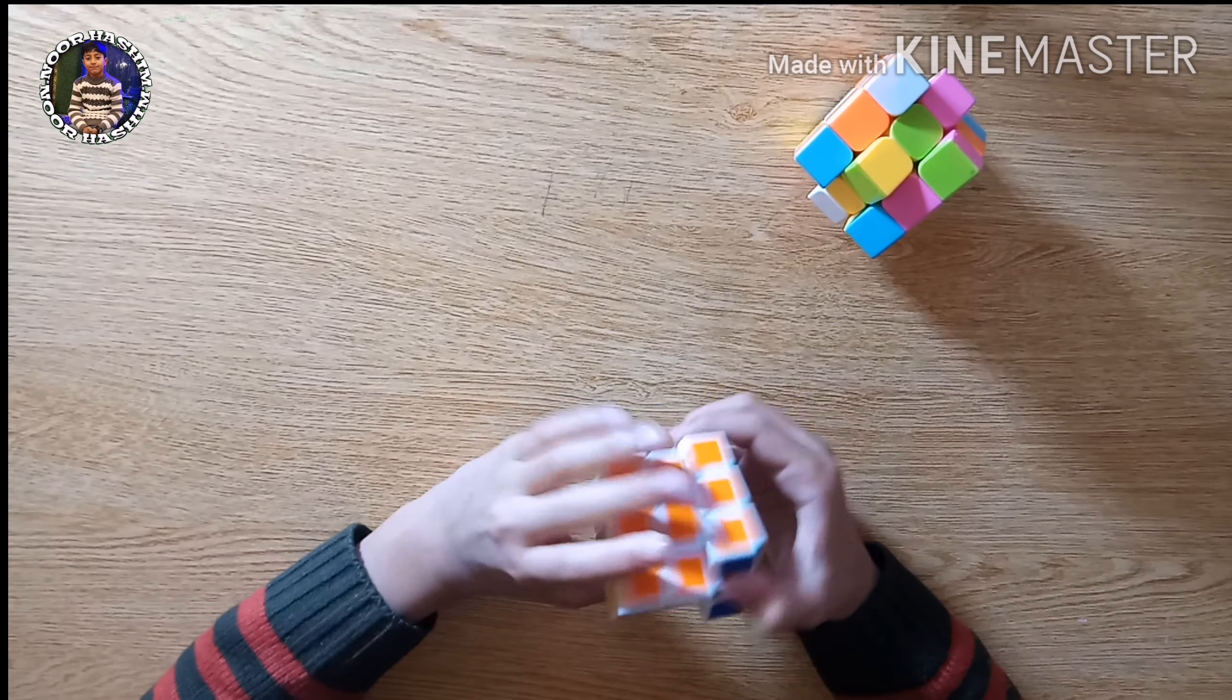9 here and 9 here and 8 on the mid side. And there are 3 types of buttons in this Rubik's Cube. The first one is the mid button which is with only one color.